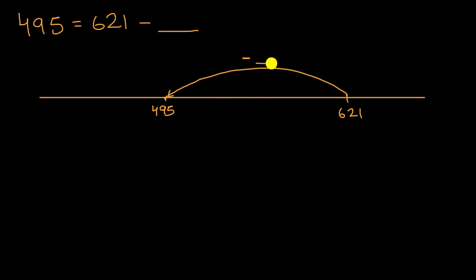So here we are subtracting blank. That's my blank over there. And so we need to figure out what that is. So how do you go from 621 to 495?